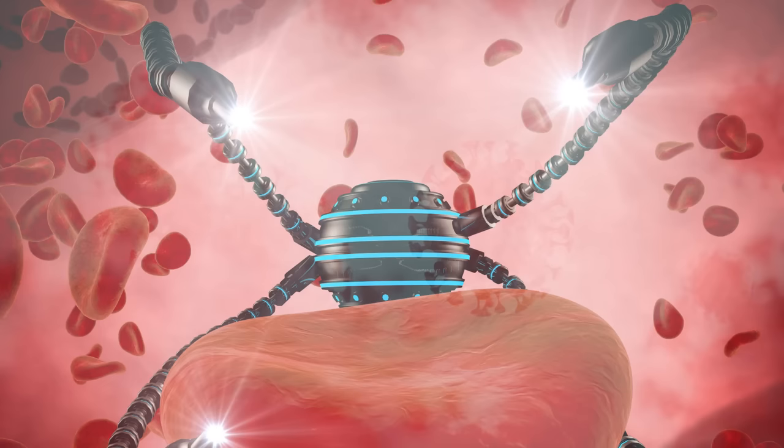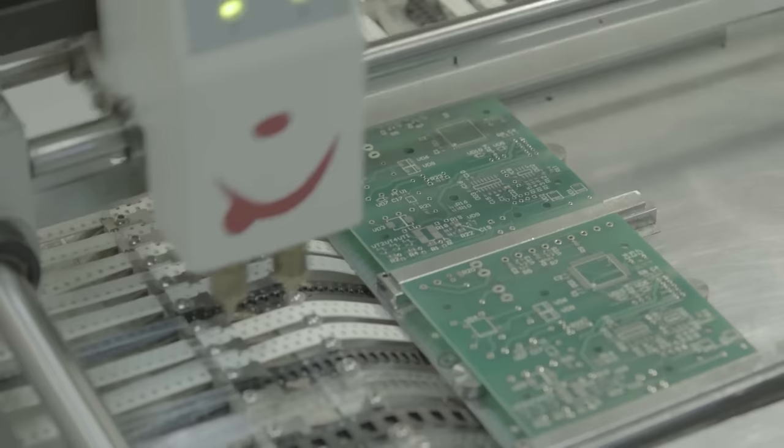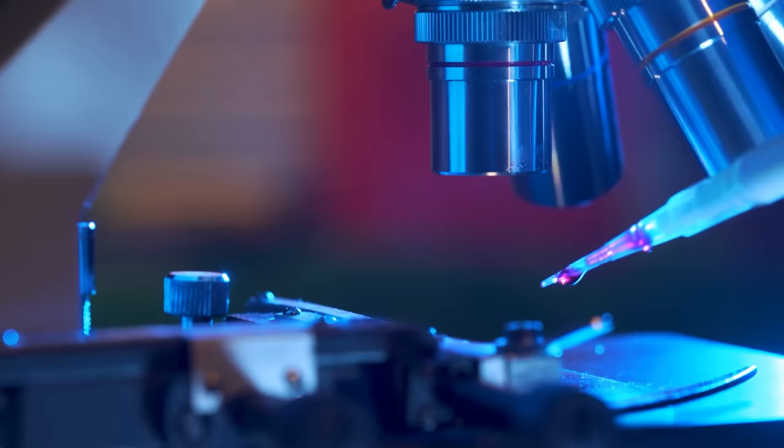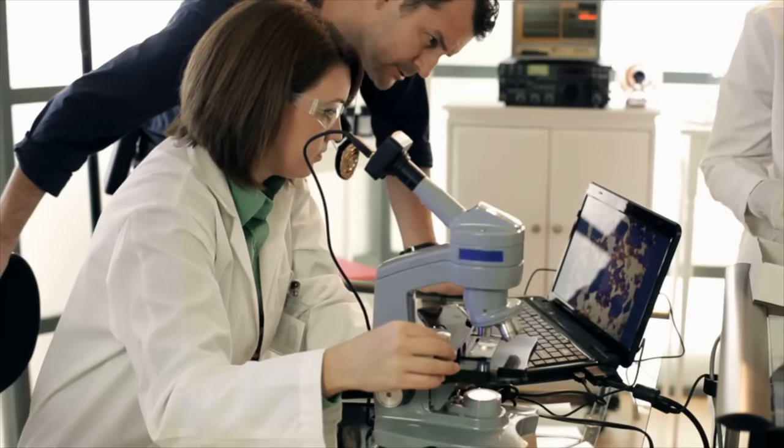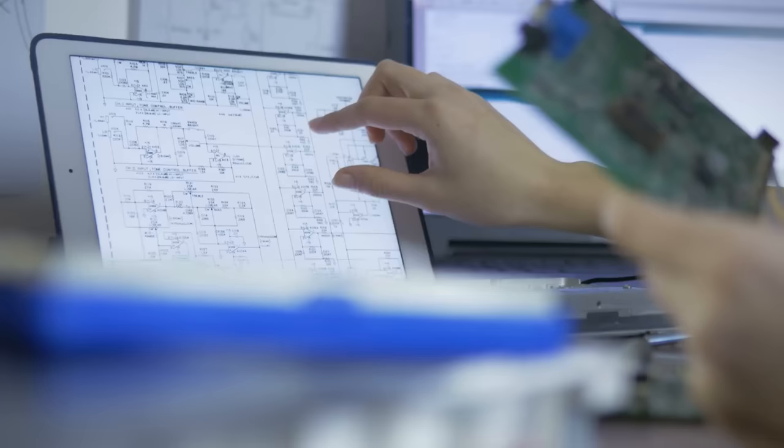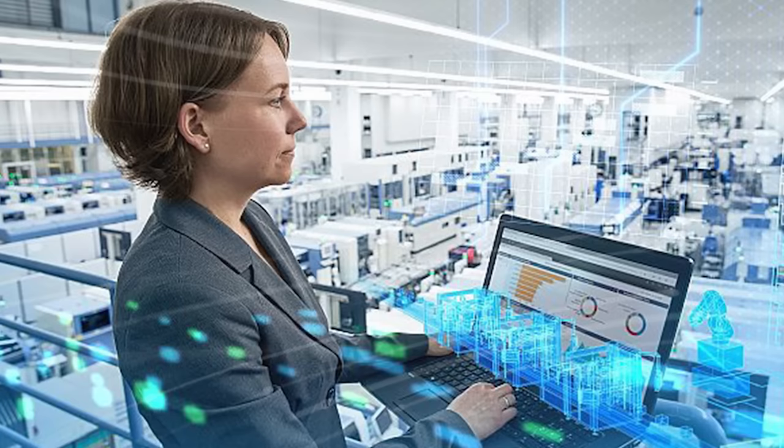This level of control enables the fabrication of complex structures and devices that were previously unattainable using conventional manufacturing methods. By harnessing the capabilities of nanorobots, manufacturers can achieve higher levels of efficiency and quality in their production processes. These robots can perform tasks with exceptional precision, reducing errors and variations in product specifications. This leads to improved product consistency, enhanced quality control, and increased customer satisfaction.